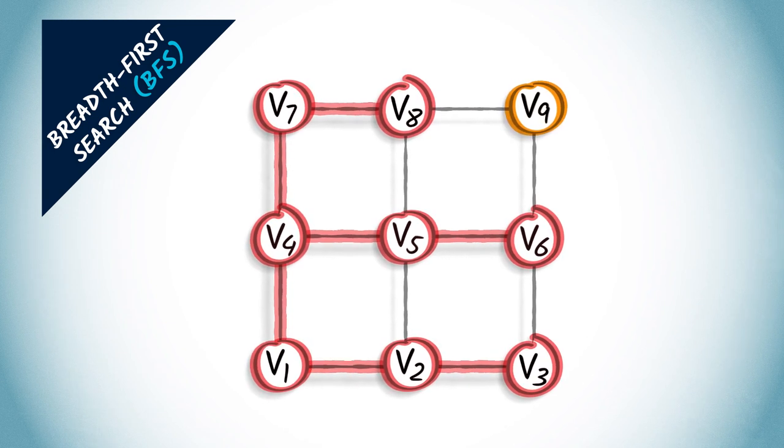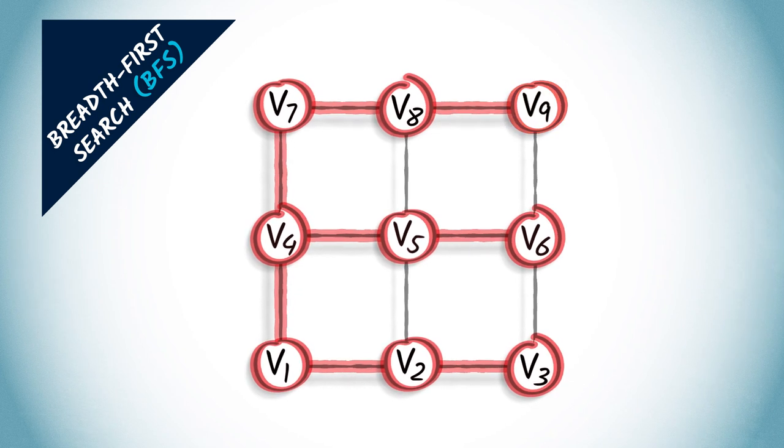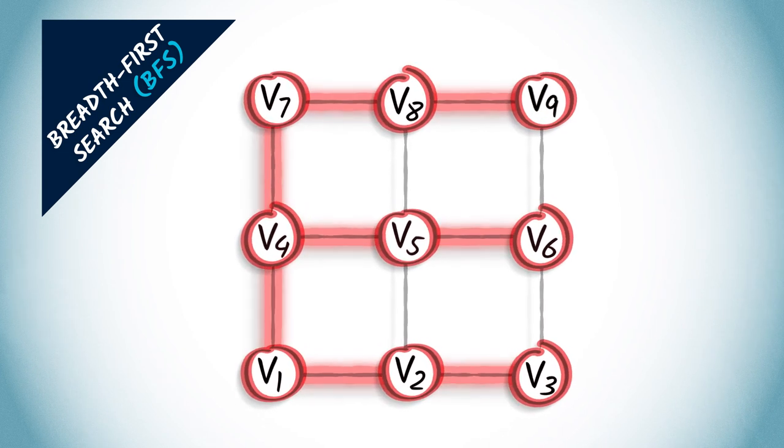Finally, the orange vertex is one hop away from V8, which is three hops away from V1. We connect them.